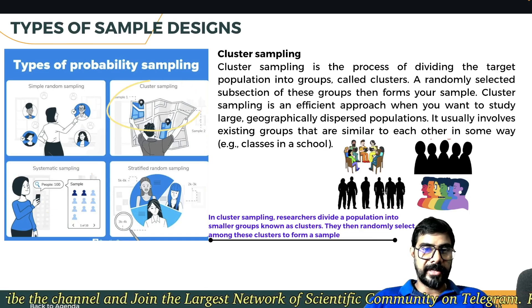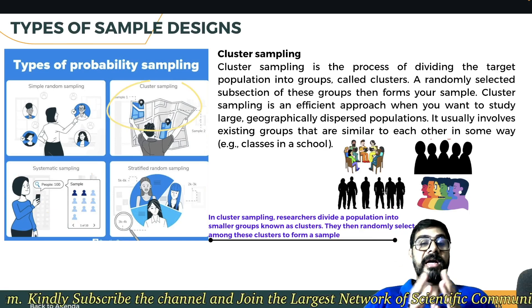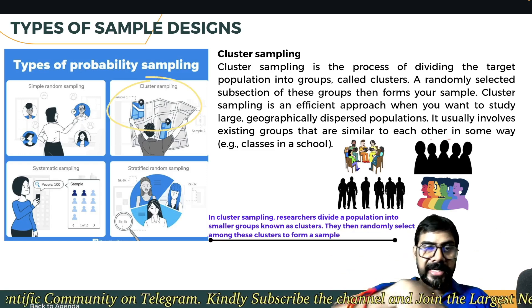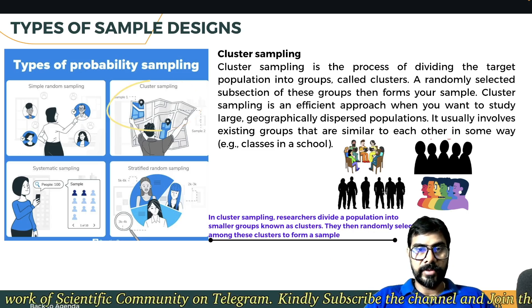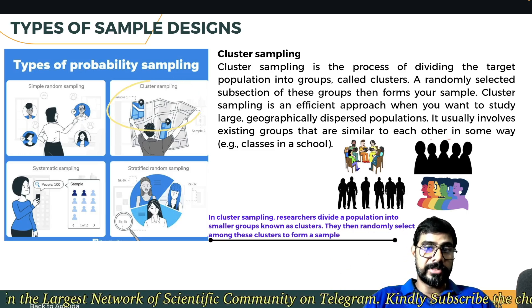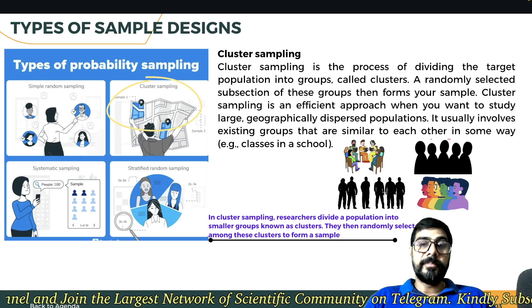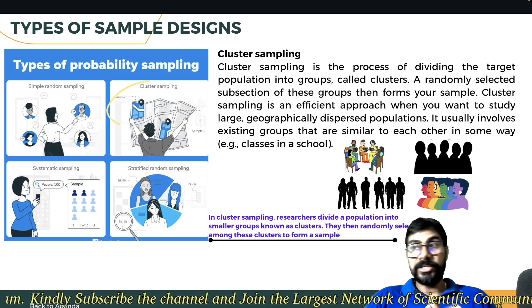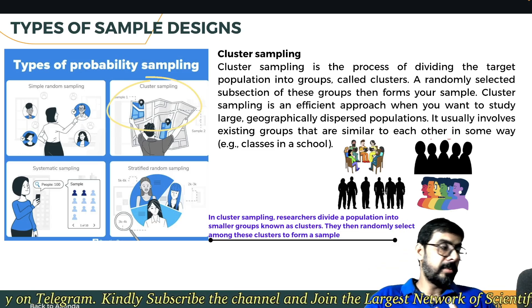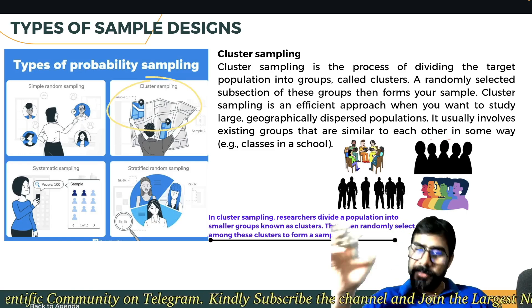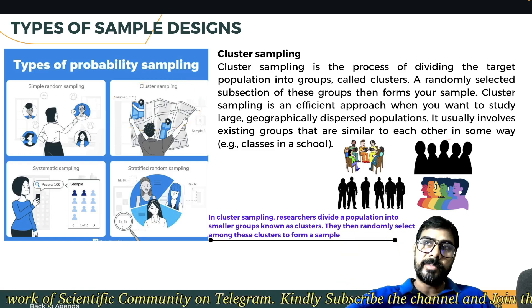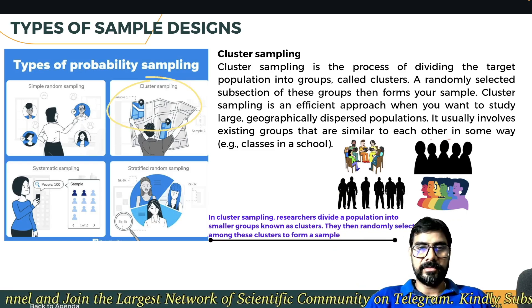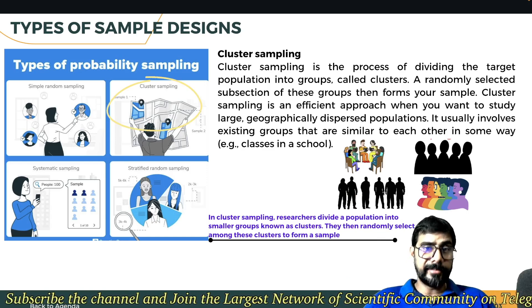Finally, cluster sampling. In a school there are classes — 1st, 4th, 6th, 9th, 10th — so I select the population from one cluster and then work on it. This is used for geographically dispersed populations: large populations, village populations, small populations, a tribal area — that is called cluster sampling.